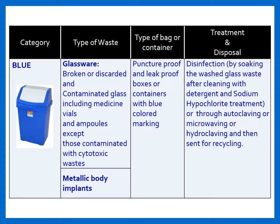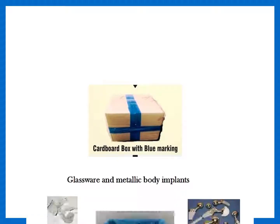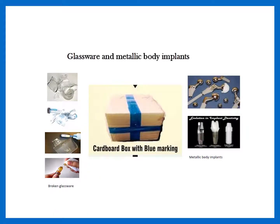The next category is blue, where glassware and metallic body implants need to be discarded. Glassware includes broken or discarded and contaminated glass, including medicine vials and ampules — except those contaminated with cytotoxic waste — and these need to be discarded in puncture-proof and leak-proof blue colored boxes. Disinfection, autoclaving, or microwaving needs to be done, and then they should be sent for recycling. To recap: all glassware and metallic body implants need to be discarded in blue colored containers.